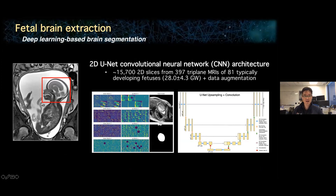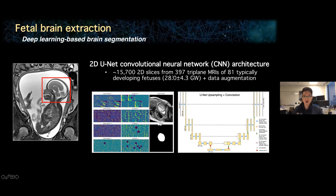One of our students implemented and developed an automatic brain segmentation tool using a 2D U-Net convolutional neural network architecture. It was trained with 2D slice images from 397 MRIs of 81 typically developing fetuses. The result was very successful — in our ten-fold cross-validation, the accuracy measured with the DICE coefficient was higher than 95%.